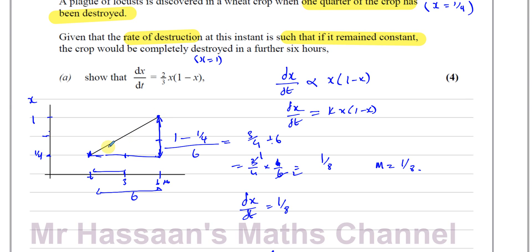Basically, it's saying: given that the rate of destruction at this instance is such that if it remained constant, it would be completely destroyed in six hours. So that's where it would end up — but it doesn't mean it was constant between there and there. The gradient of the curve at this point is such that if it had remained constant from this point, after six hours it would have been destroyed completely.